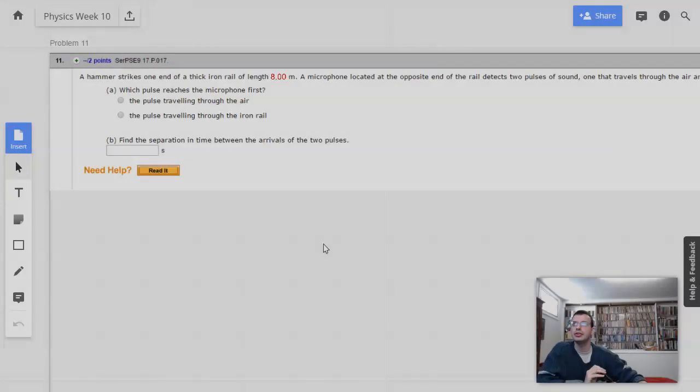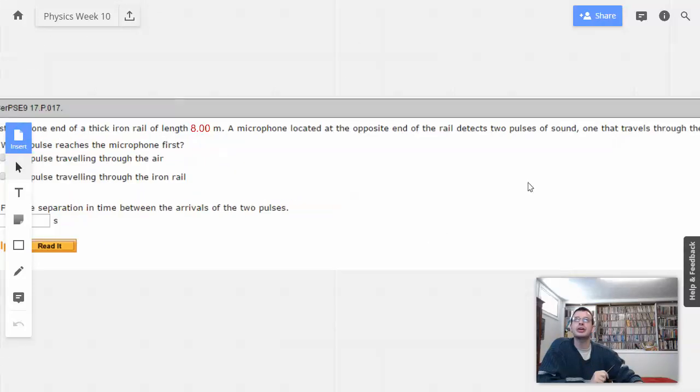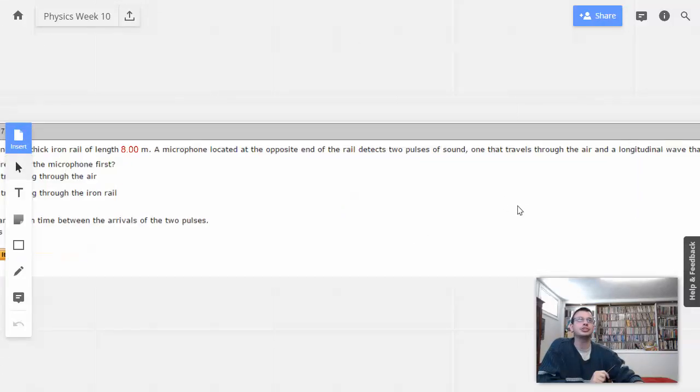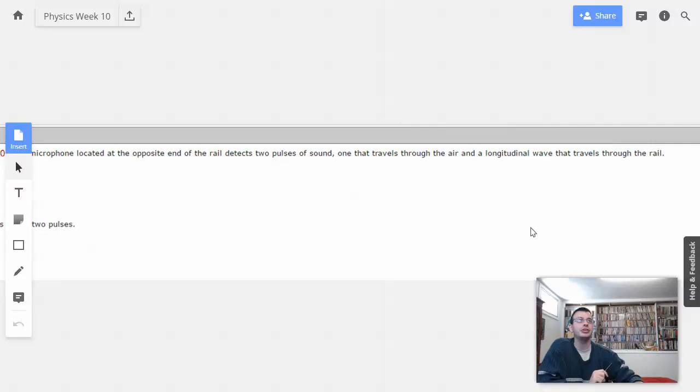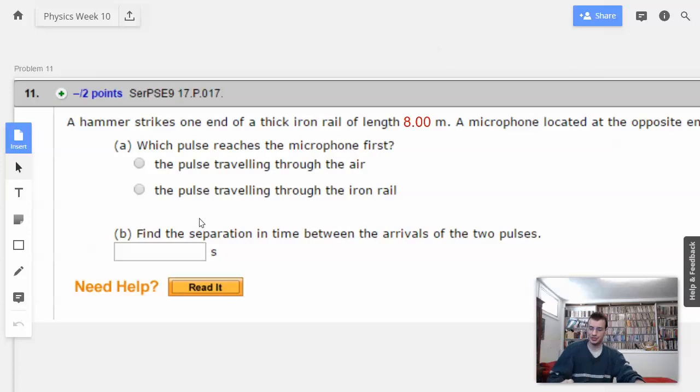Week 10, problem 11. A hammer strikes one end of a thick iron rail of length 8 meters. I think they say thick because that way they don't want the rail itself wobbling because that would probably induce other factors and other sounds and such. A microphone located at the opposite end of the rail detects two pulses of sound, one that travels through the air and the other through the rail. Which pulse reaches the microphone first?